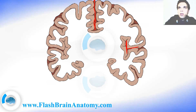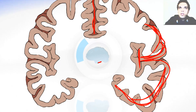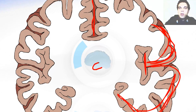The insula is enclosed by the temporal lobe over here and the frontal lobe over here. So this is the temporal lobe of the brain and this is the frontal lobe of the brain.